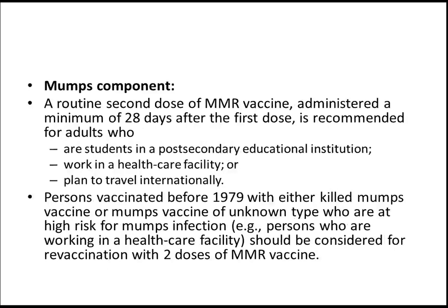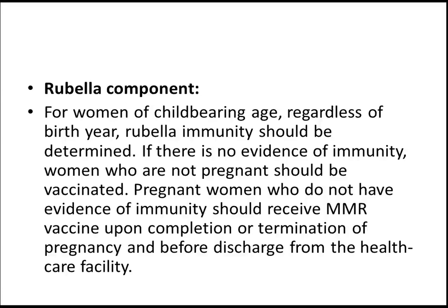Mumps component: A routine second dose of MMR vaccine, administered a minimum of 28 days after the first dose, is recommended for adults who are students in post-secondary educational institutions, work in health care facilities, or plan to travel internationally. Persons vaccinated before 1979 with either killed mumps vaccine or mumps vaccine of unknown type who are at high risk for mumps infection should be considered for revaccination with two doses of MMR vaccine.